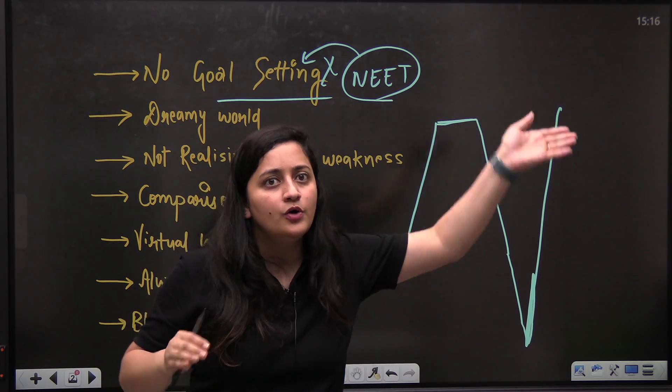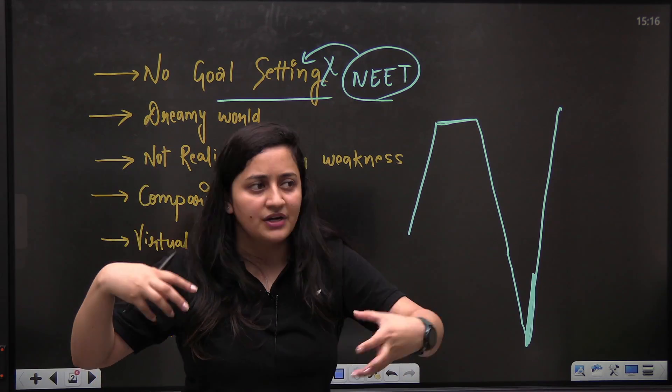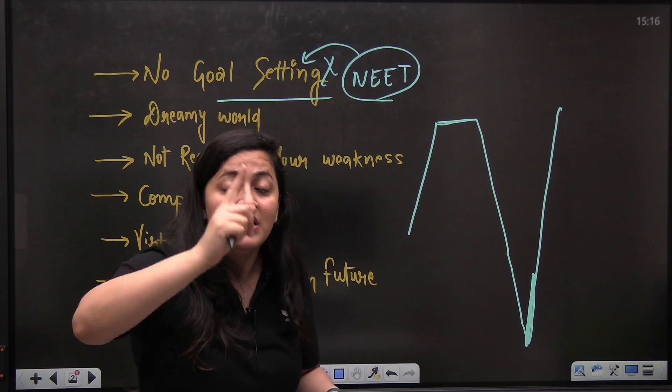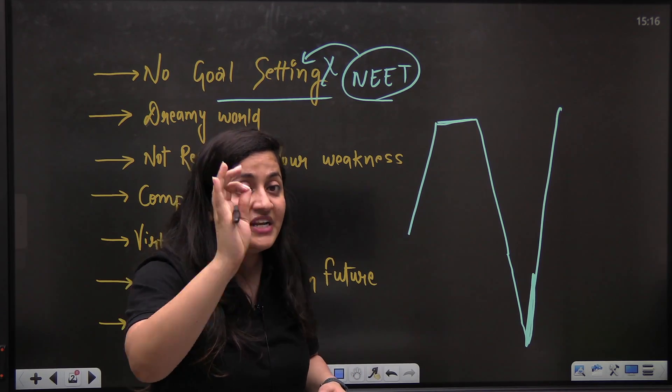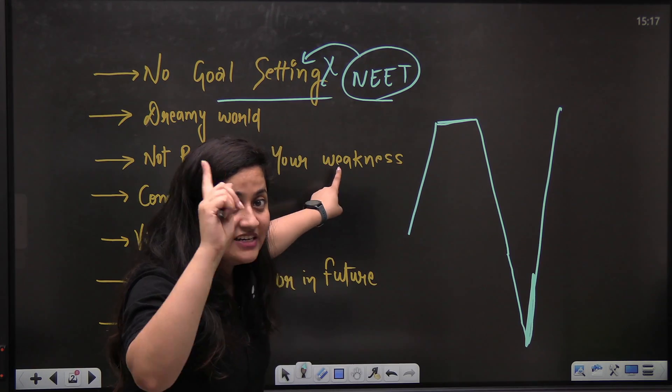You are in a dreamy world that I'll do it later. I can do this. I have that courage. I'm a very good student. I'm a good learner. I'll do it later. Stop it. Stop lying to yourself. There are more than 22 lakhs aspirants and you want that one seat and for that you have to fight. Just keep it in your head.